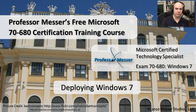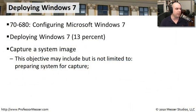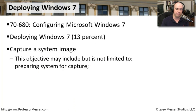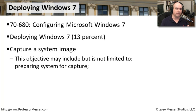Welcome to this module of Professor Messer's Free Microsoft 7680 Certification Training Course on Deploying Windows 7. I'm James Messer. In this module, we're going to look at the requirements from our Configuring Microsoft Windows 7 Certification Exam. We're now in the second section on Deploying Windows 7 — it's 13% of the certification — where we need to understand how to capture a system image. The focus of this particular module is on the requirement of preparing the system for capture.